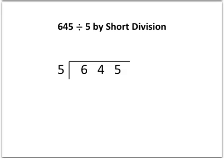So this is the sum 645 divided by 5 by what we call short division. Now what I've done here is I've written it using what some people call the bus stop, which is that kind of L on its side there. And our job is to work out how many fives go into 645.